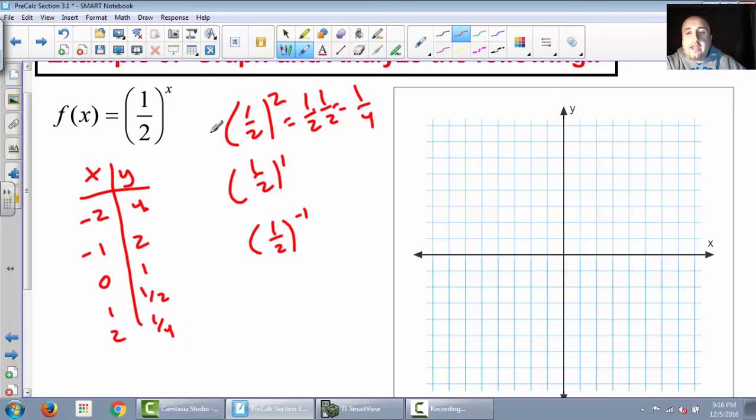Alright, so let's plot this one. So negative 2, 4. Negative 1, 2. 0, 1. 1, 1 half. 2, 1 quarter. Okay, so now you can see that this one's kind of the opposite. So if I went down here and did negative 3, that's actually going to be 9. So it looks very similar to the last one, except it's in the opposite direction.